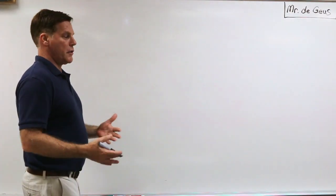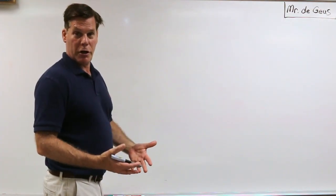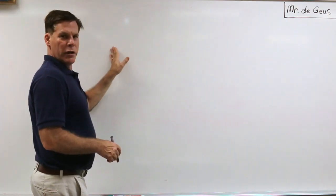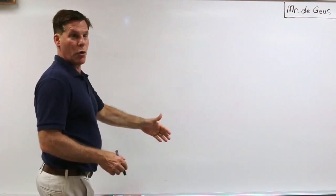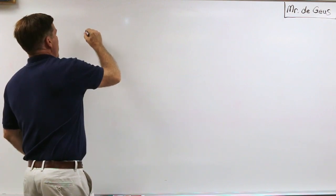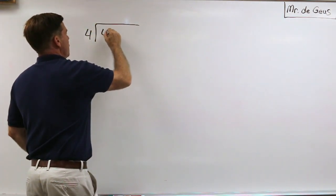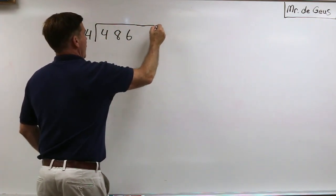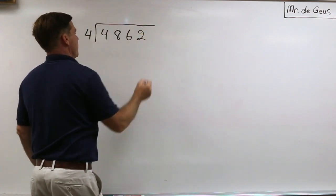Alright, this lesson is going to be on how to do long division. So what I'm going to do here is we're going to do a one-digit number into a four-digit number, and I'm going to show us a couple of different ways to go about that. Let's go ahead and we'll choose, let's go with 4 goes into 4862.